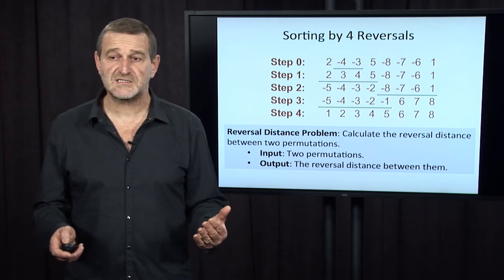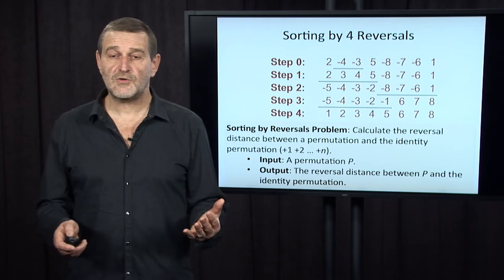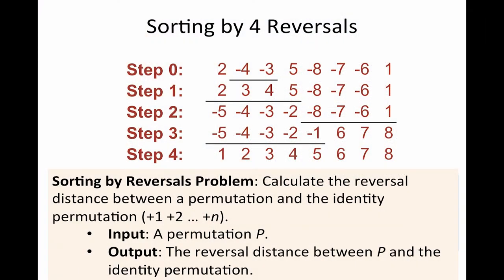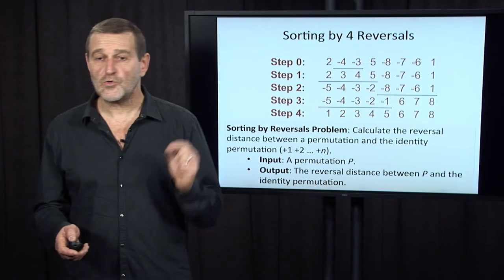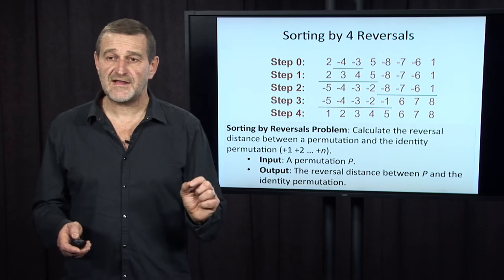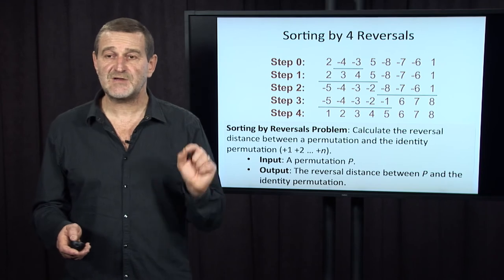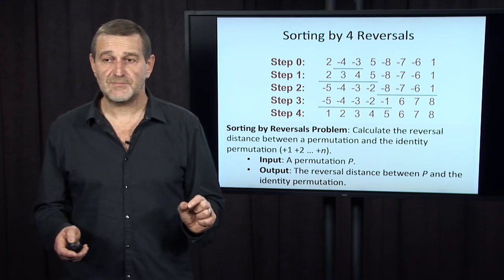We will also be talking about sorting by reversal problems, which uses as input just a single permutation and asks for the reversal distance between this permutation and the identity permutation, plus one, plus two, plus N. Why identity permutations? Because we are at liberty to label the final permutations the way we want. And we will usually label this as plus one, plus two, plus three, plus N.